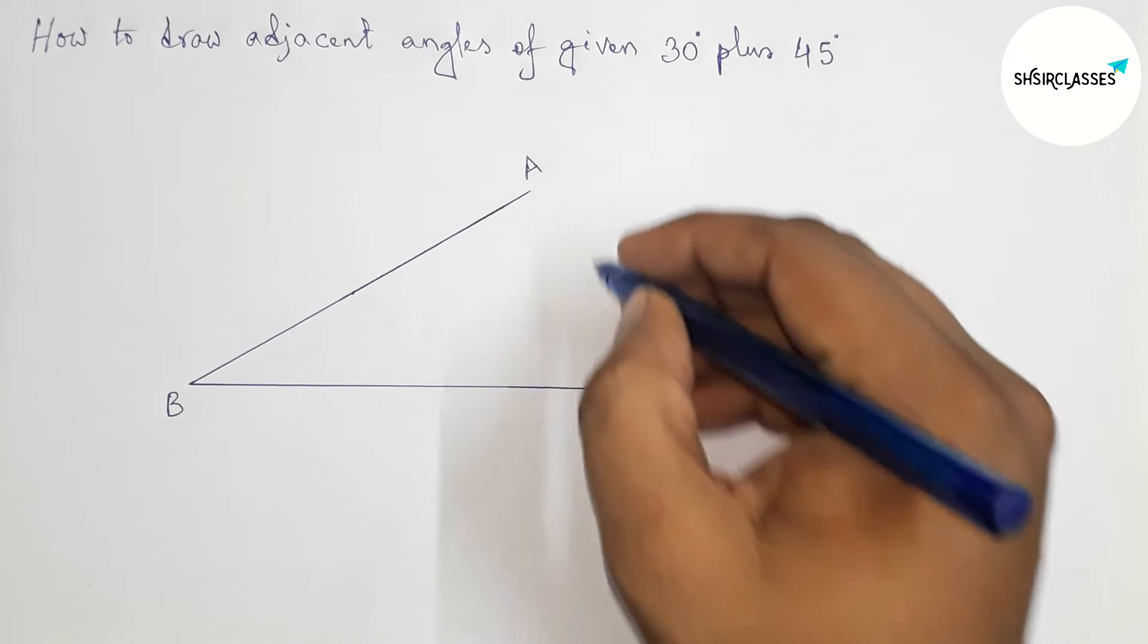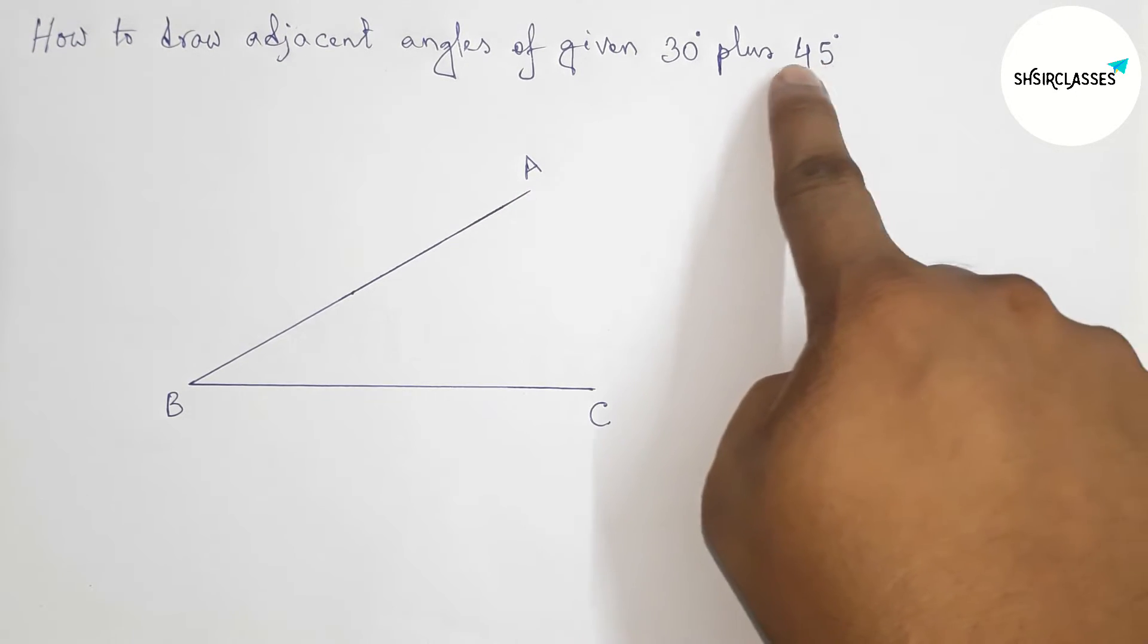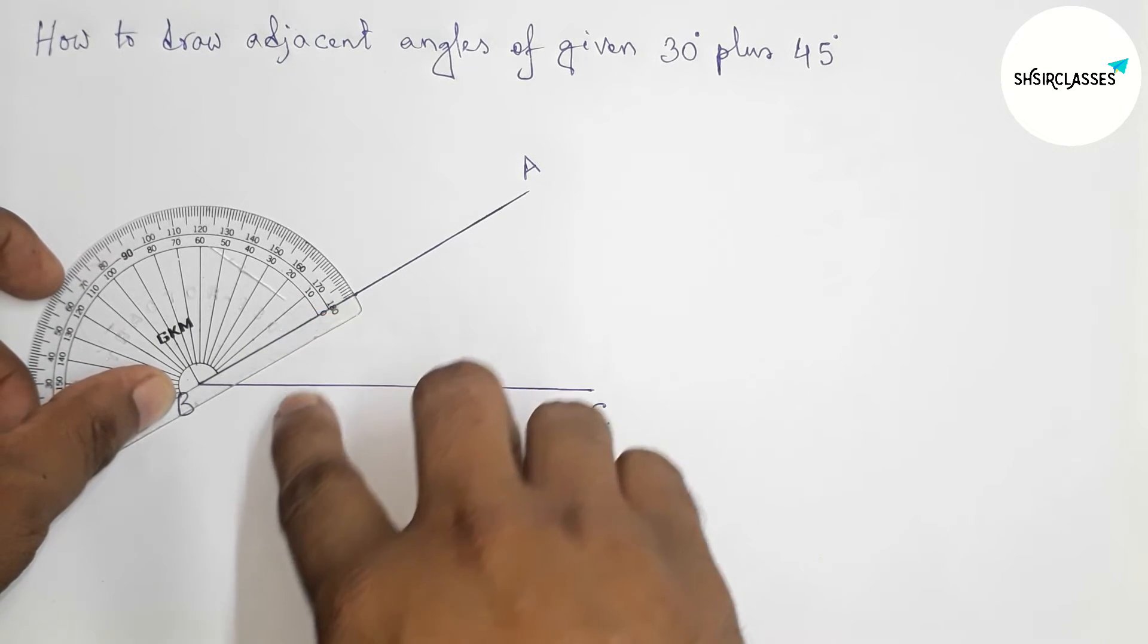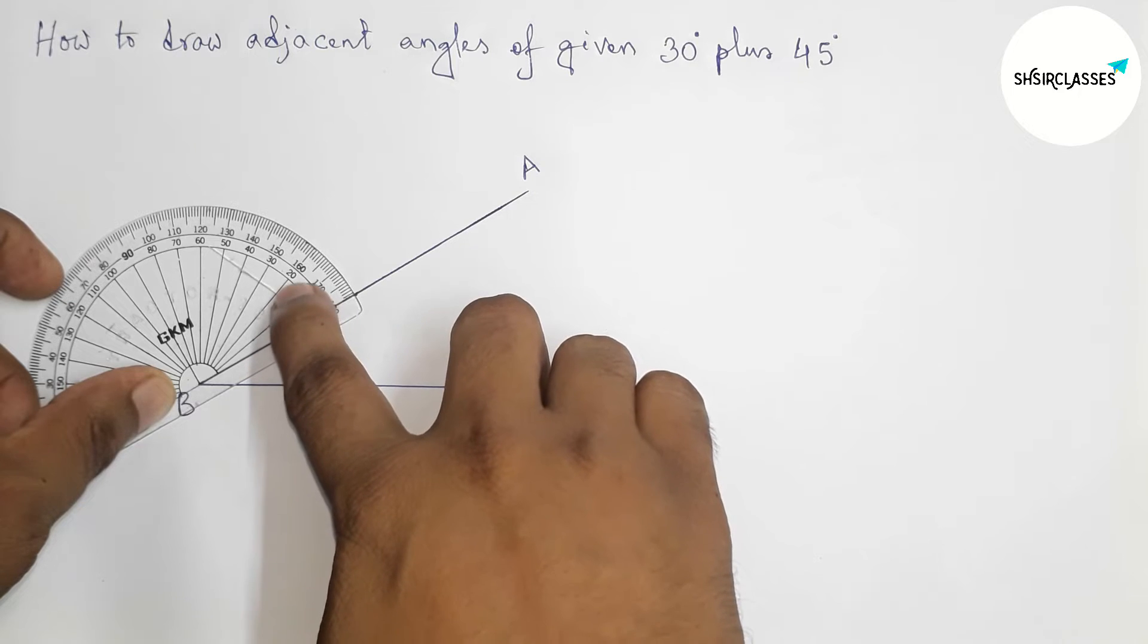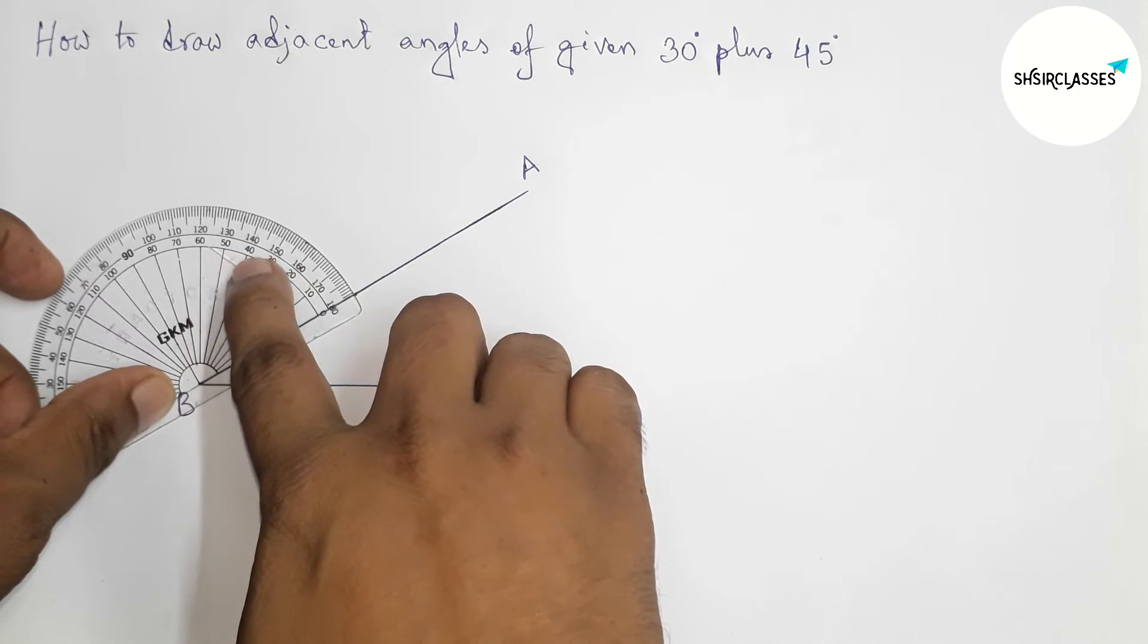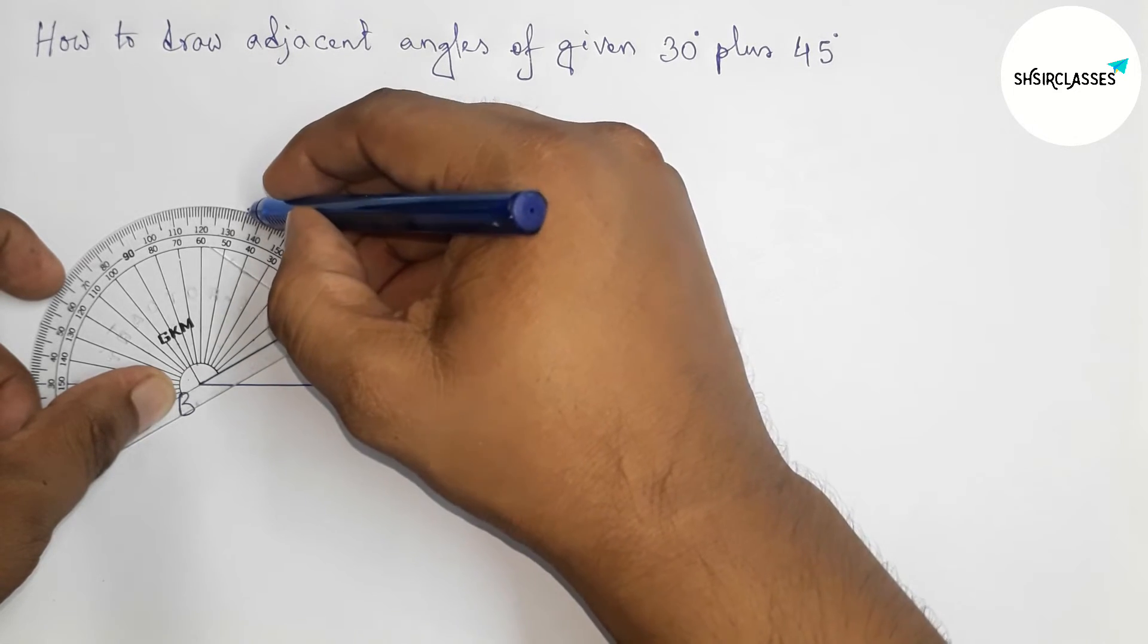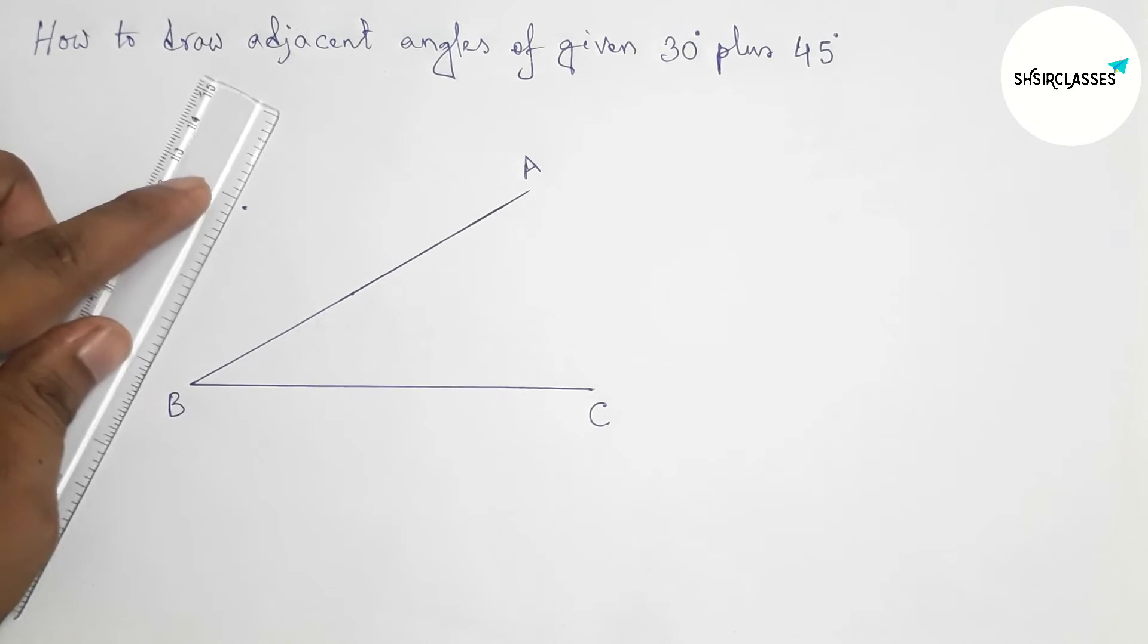Next drawing 45 degree angle along the line AB with the help of protractor. So putting the protractor and counting 45 degrees. So between 50 and 40, this is 45 degree angle, okay.